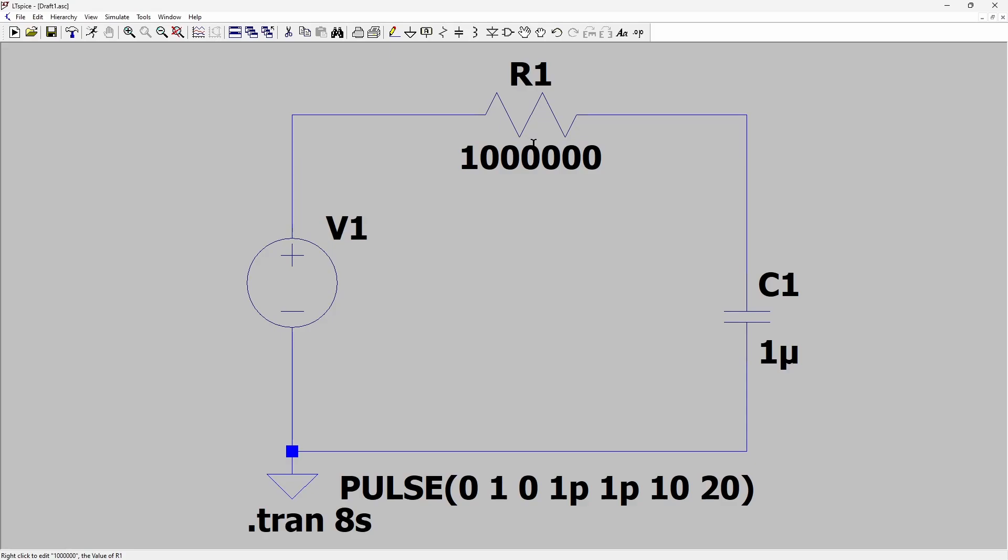So then you get 1 times 2.2. So the rise time of this circuit according to that equation should be 2.2. So that's the time taken to get from 10% to 90% of the final voltage which in this case is 1 volt.